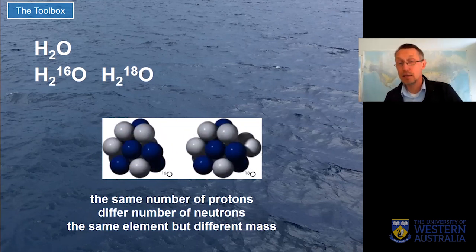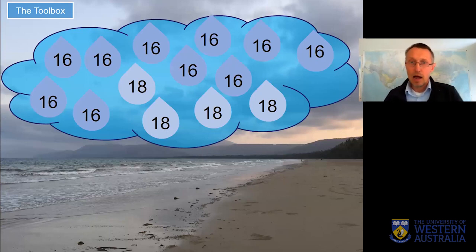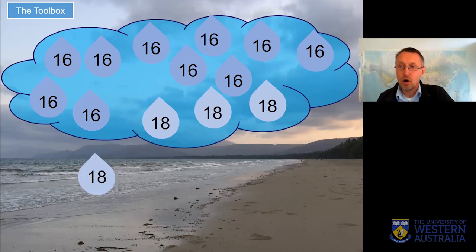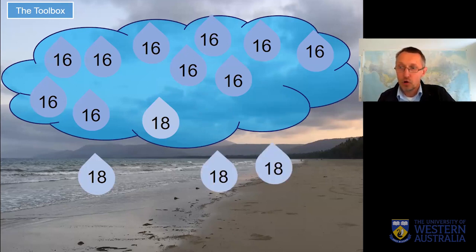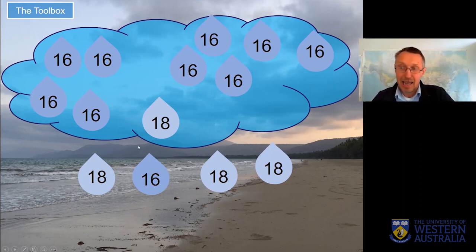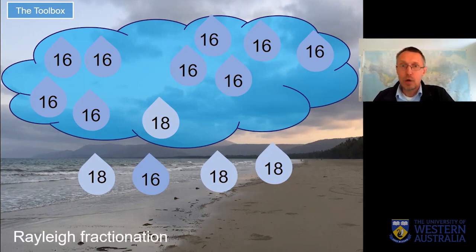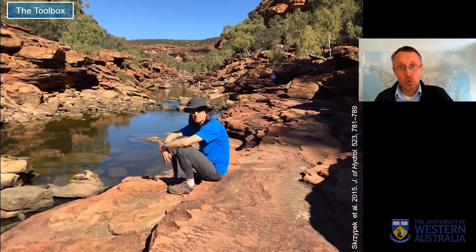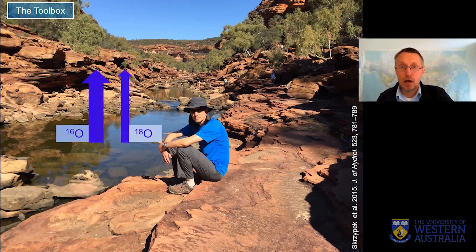I will show you a couple of examples and then go to case studies. If we think about a cloud hanging above the continent, in the cloud we will have both ¹⁶O and ¹⁸O. But because there is a difference in mass, when there is any precipitation and rainfall, those containing ¹⁸O will disappear quicker from the cloud and actually contribute to the rainfall more than ¹⁶O. This is called rainfall fractionation, and it depends on temperature, humidity, and distance from the sea.